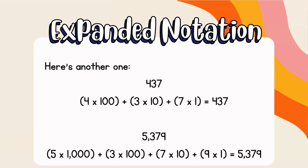The next example is 5,379. We're going to say 5 times 1,000 because 5 is in the thousands place, plus 3 times 100 because the 3 is in the hundreds place, plus 7 times 10 because 7 is in the tens place, plus 9 times 1 because 9 is in the ones place, and that equals 5,379.